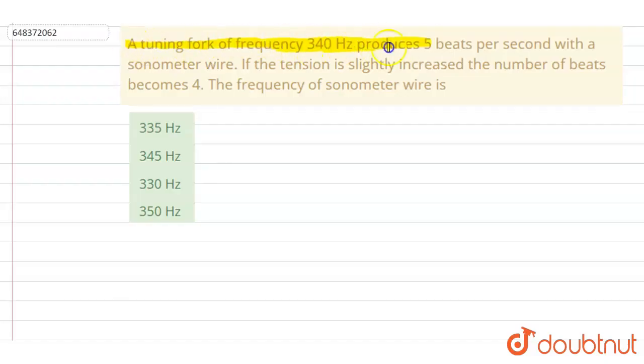frequency 340 Hz produces 5 beats per second with a sonometer wire. If the tension is slightly increased, the number of beats becomes 4. The frequency of sonometer wire is? So if you see, when the tension is increased, the difference in frequency is decreased. If you see the dependence of the frequency, it is this.